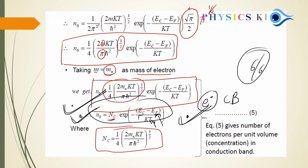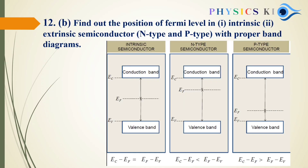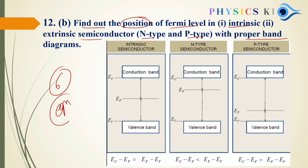This is for revision purposes, so we are going through it quickly. You already know how to derive these and what these functions mean. The next important question regarding this chapter: Find the position of the Fermi level in intrinsic and extrinsic (N-type and P-type) semiconductors, with a proper diagram.